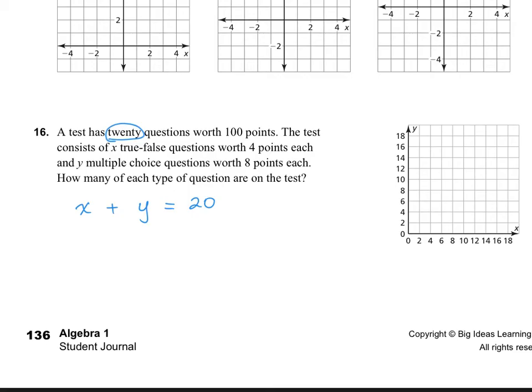And my next equation is, I have, it talks about the points. So I have 100 points total. I have 4 points for the x's and 8 points for the y's. So we're going to go 4 for the x's plus 8 for the y's equals a total of 100 points total.